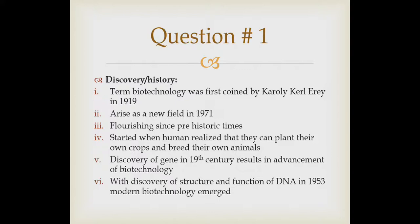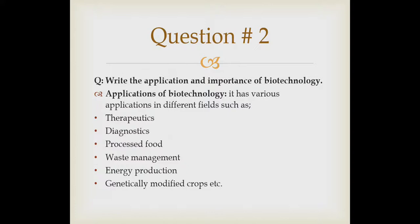Similarly, if we are obtaining milk from cattle, that is also biotechnology, because we are using a product of a living organism for human beings. Biotechnology actually started when humans realized they could plant their own crops and breed their own animals. Then with the discovery of the gene in the 19th century, biotechnology got more advancement, and with the discovery of the structure and function of DNA in 1953, modern biotechnology emerged — in which we can modify the genes of organisms, which is termed genetic engineering, through which insulin can be produced.